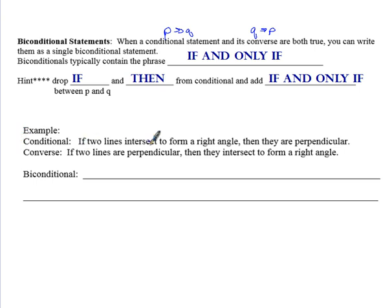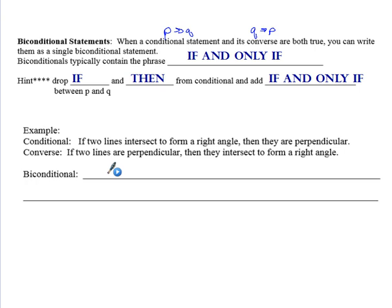So what that looks like is I gave you two scenarios here of which both of these are true. The conditional states if two lines intersect to form a right angle, then they are perpendicular. That is very true. The converse, if I switch those, says if two lines are perpendicular, then they intersect to form a right angle. That is also true. So how do I write that as a biconditional? Well, drop if and then from the conditional and put if and only if in between P and Q. So if this is my P and this is my Q, I'm essentially dropping this, dropping this, and putting if and only if in the middle there. So two lines intersect to form a right angle if and only if they are perpendicular. Now, the cool thing about biconditionals is you can actually write that the opposite way. I could also say two lines are perpendicular if and only if they intersect to form right angles. So that works too.